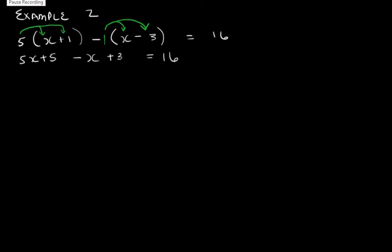5 times x is 5x. 5 times 1 is 1. And then negative 1 times x is negative x, and negative 1 times negative 3 is positive 3. And that's equal to 16.